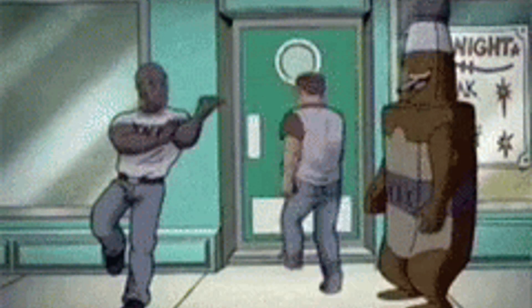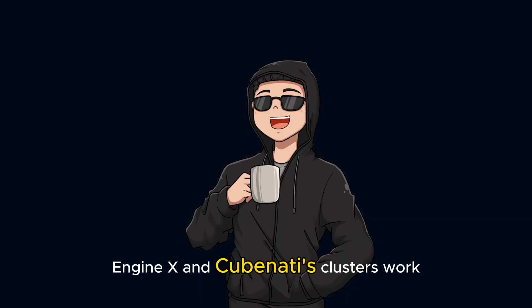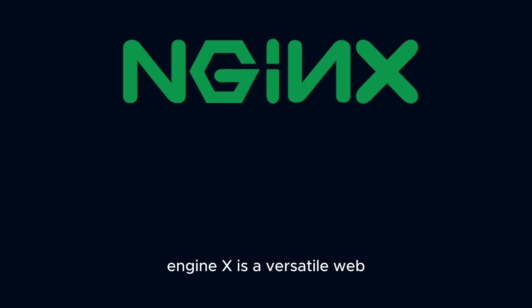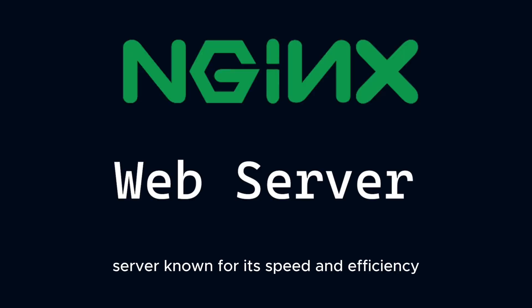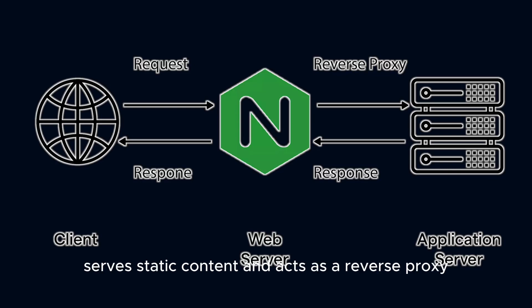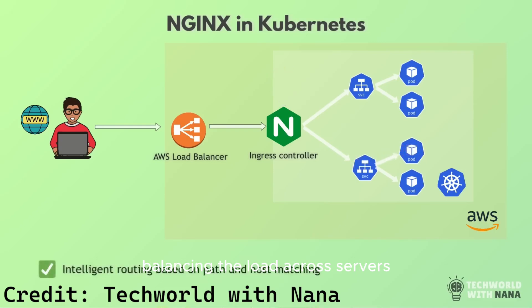Let's take a quick high-level look at how NGINX and Kubernetes clusters work. NGINX is a versatile web server known for its speed and efficiency. At its core, it handles HTTP requests, serves static content, and acts as a reverse proxy. This means it can receive external requests and route them to the appropriate backend services, balancing the load across servers.